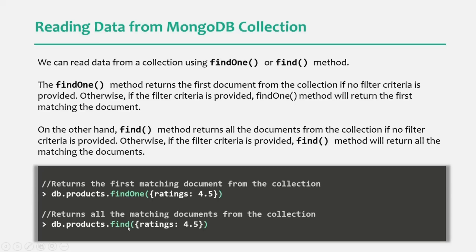Here you can see we are passing a filter object to the find method as the first argument. In that filter object, we can specify some condition — here we are specifying that we want to filter all those products where the rating is 4.5. But what if we want to get all the products whose rating is greater than or equal to 4.5? In that case, we can use an operator in the filter object, such as $gte, which stands for greater than equal to.